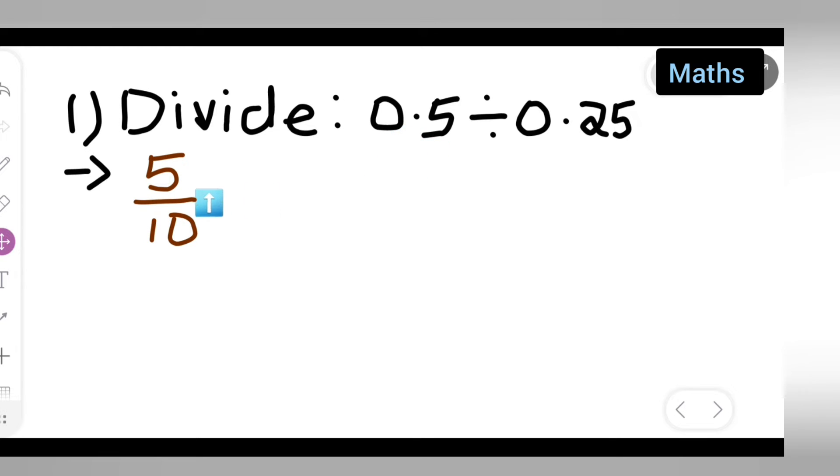5 upon 10, so the decimal point will go. Here it will be 25 upon 100, like this way you can say.